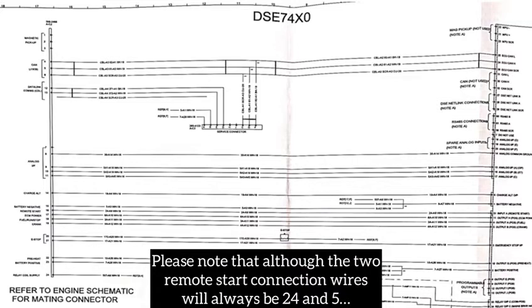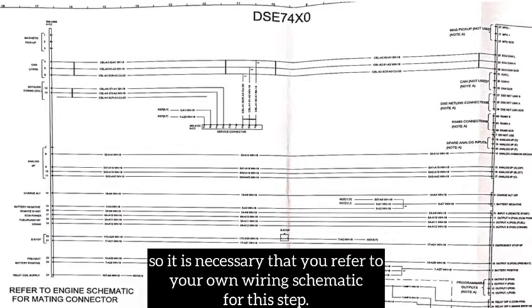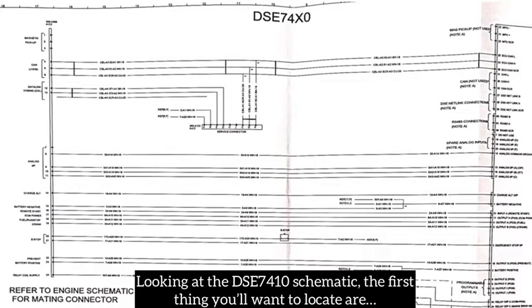Please note that although the two remote start connection wires will always be 24 and 5, the terminal block connections will vary based on your specific genset, so it is necessary that you refer to your own wiring schematic for this step.